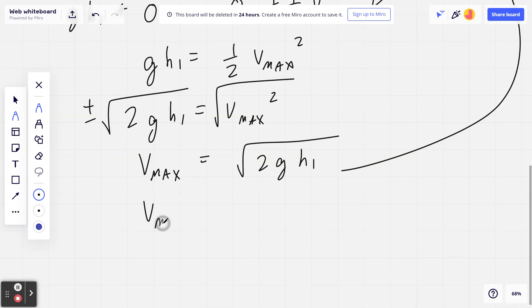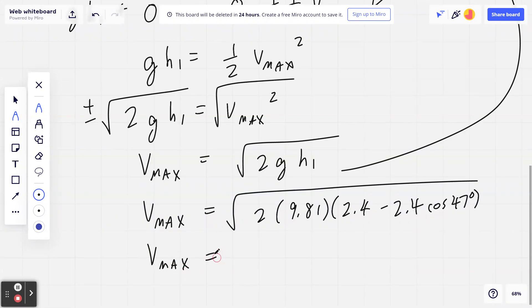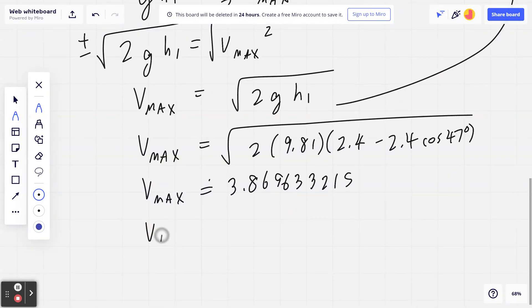Now I go back and I plug in the following: gravity of course is 9.81, h1 again in this case is going to be 2.4 minus 2.4 times cosine of 47 degrees. So take your calculator, turn it on, press clear, take a moment. This should be 3.8696332, and of course if you round this to two sig figs or if you round this to one decimal place, approximately 3.9 meters per second.